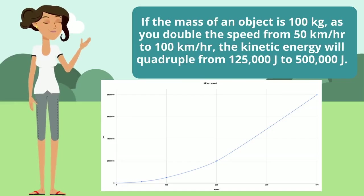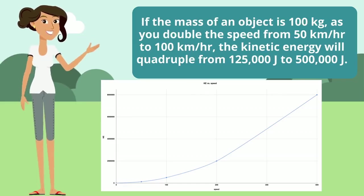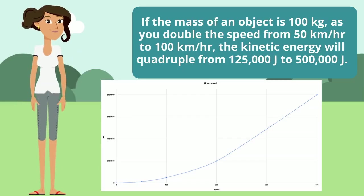If the mass of an object is 100 kilograms, as you double the speed from 50 kilometers per hour to 100 kilometers per hour, the kinetic energy will quadruple from 125,000 joules to 500,000 joules.